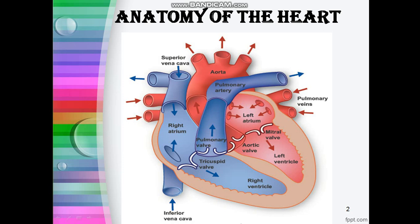Comparing all four chambers, the left ventricle is the largest and strongest chamber in our heart. Now we can study how blood flows through the heart. In this figure you can see the superior vena cava and inferior vena cava, which are veins.